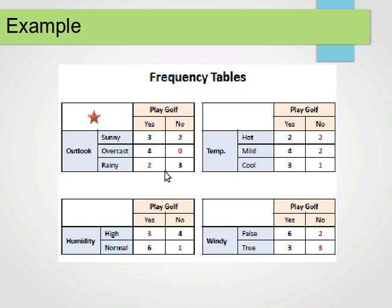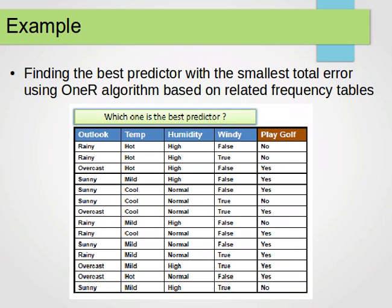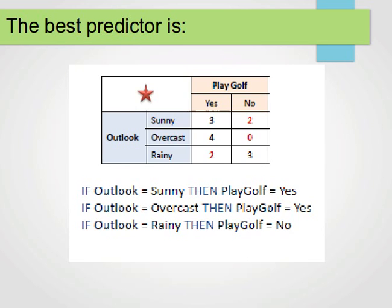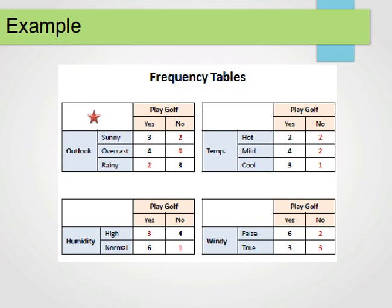The sum of all instances across each frequency table should equal the total number of instances — in this case 14. If those numbers don't sum to 14, something is not right. From these frequency tables, we can build a confusion matrix to calculate the accuracy or measure the error, and we notice that Outlook gives us the highest accuracy.